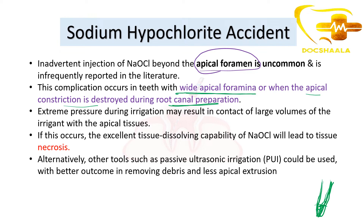Extreme pressure during irrigation may result in contact of large volumes of the irrigant with the apical tissues. If this occurs, the excellent tissue dissolving capability of sodium hypochlorite will lead to necrosis. Alternatively, other tools such as passive ultrasonic irrigation can be used, with better outcome in removing debris and less apical extrusion.